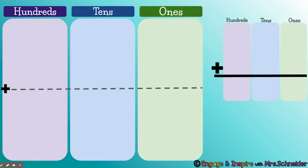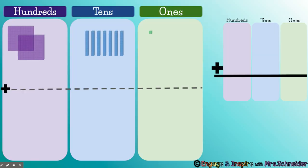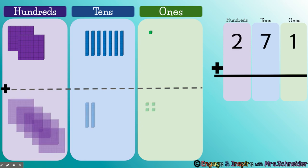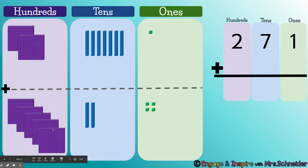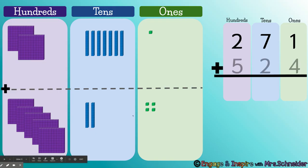Let's practice another problem. In this problem, we're going to have 200, 10, 20, 30, 40, 50, 60, 71 — 271 — plus 100, 200, 300, 400, 500, 10, 20, 21, 22, 23, 24 — 524.